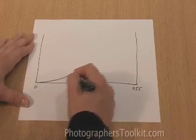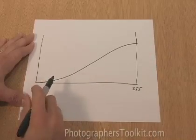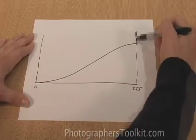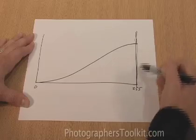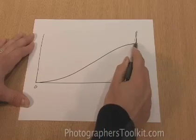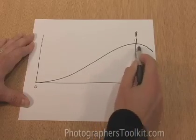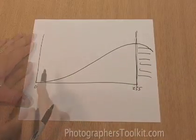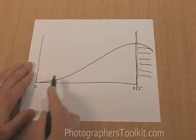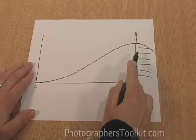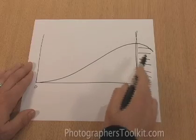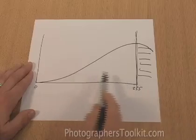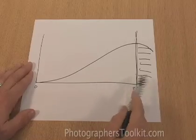What you don't want is a histogram that looks like this, for example, because if your boundary here is pure white at 255, you have all this data that has been cropped off. In this case the data is stacking up to the right, which means we have all these highlights that are blown out. This is likely to be an image that is overexposed.